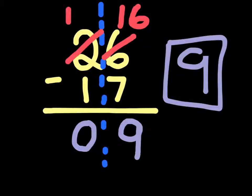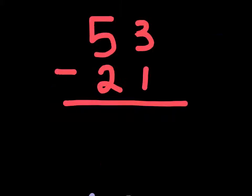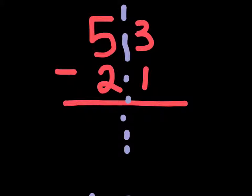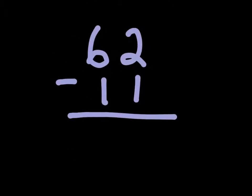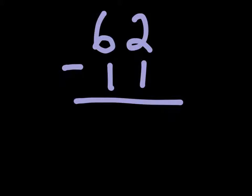The next slide has a few questions you can try on your own by pausing the video, or you can watch me go through them. First question: 53 minus 21. We break it into left and right hand columns. Right hand column: 3 minus 1 is 2. Left hand column: 5 minus 2 is 3. So the answer is 32.